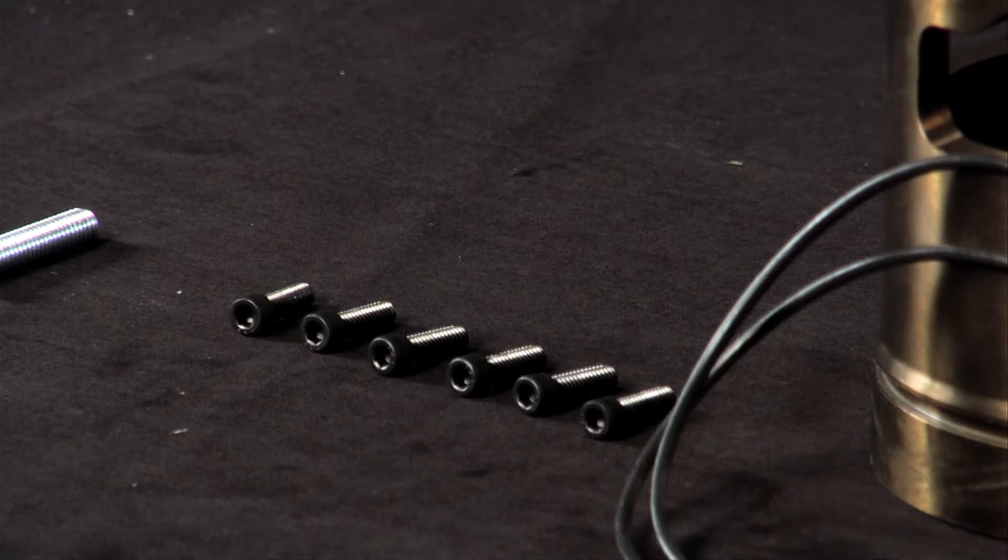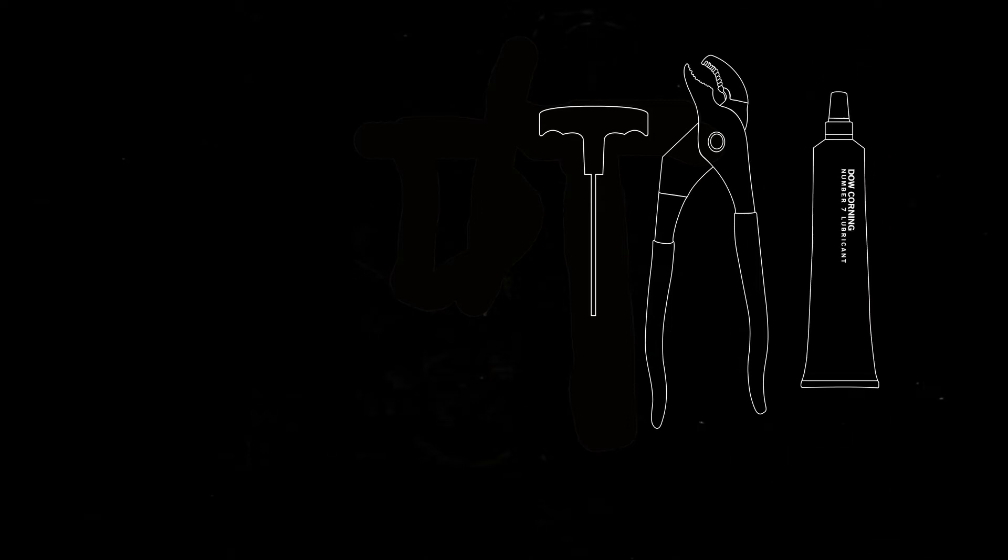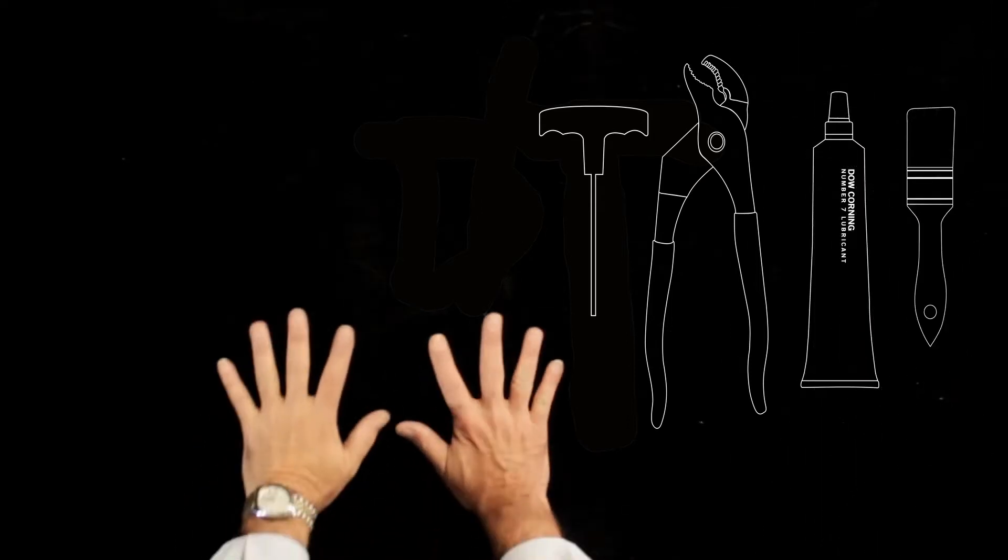six retaining head screws, two jack-out screws, and five elastomers appropriate for the product. You'll also need an allen wrench, channel lock pliers, a suitable elastomer lubricant, a brush, and an extra set of hands.